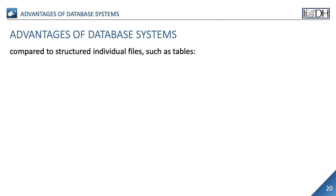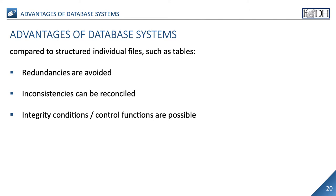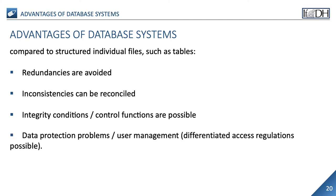There are a number of advantages that database systems have over structured individual files such as tables. Firstly, redundancies can be avoided, which not only makes it easier to store the data but also to change it, because the respective entries only have to be changed once in one place. Secondly, inconsistencies and contradictions can be reconciled, which easily arise when several users work on the same table. Thirdly, dependency relationships between data can be mapped directly in the database. The conditions defined in this way can also assume a control function during data entry and thus help to avoid errors, for example if only certain values are allowed in a data field.